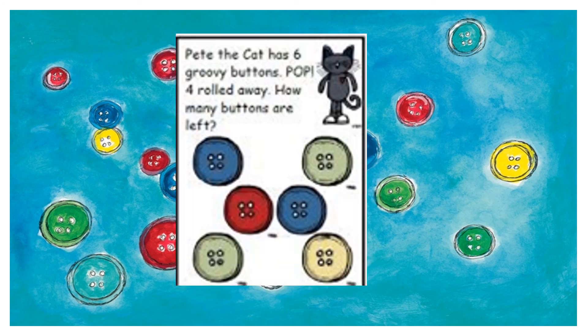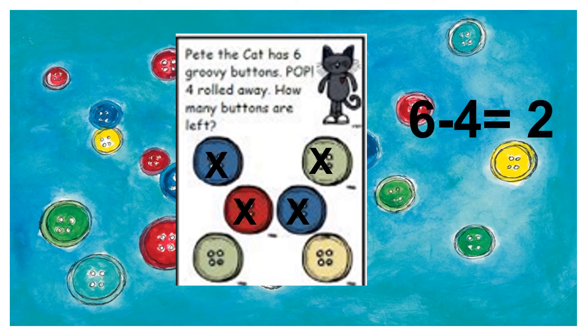Pete the Cat has six groovy buttons. Pop! Four rolled away. How many buttons are left? Let's count the buttons. Put your finger on them. One, two, three, four, five, six. There are six buttons. Four rolled away. Now let's X off four. One, two, three, four. Now let's count how many buttons are left. One, two. So our math problem is six minus four equals two.